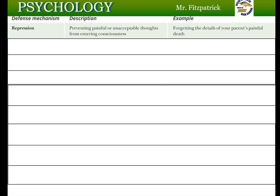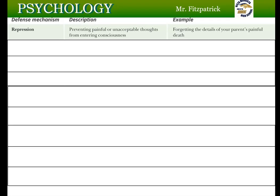The first defense mechanism is repression — though if I ask you to name defense mechanisms, repression is not one I'll accept because it's debatable. Repression says that when something happens, like being sexually molested, we push that out of our consciousness so we don't remember it. This is debated because usually such experiences are very memorable. When people are placed under hypnosis, they're in a suggestible state and may implant false memories, so repression is not accepted.